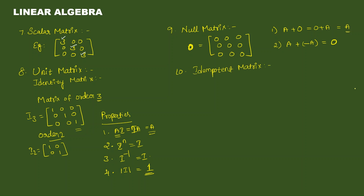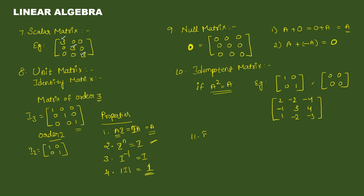Next — idempotent matrix. A matrix A is called idempotent if A squared equals A. Example: identity matrix I — we know I power n equals I. So A squared equals A. Next — involuntary matrix. A matrix A is called involuntary if A squared equals I. Example: the identity matrix [1, 0; 0, 1].